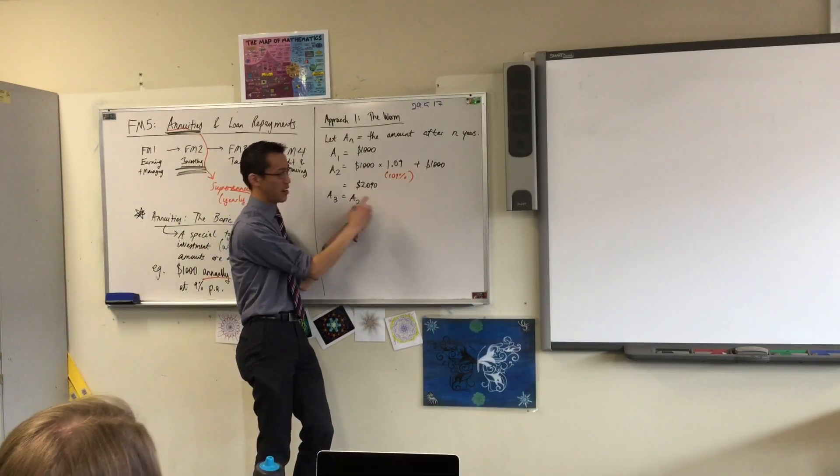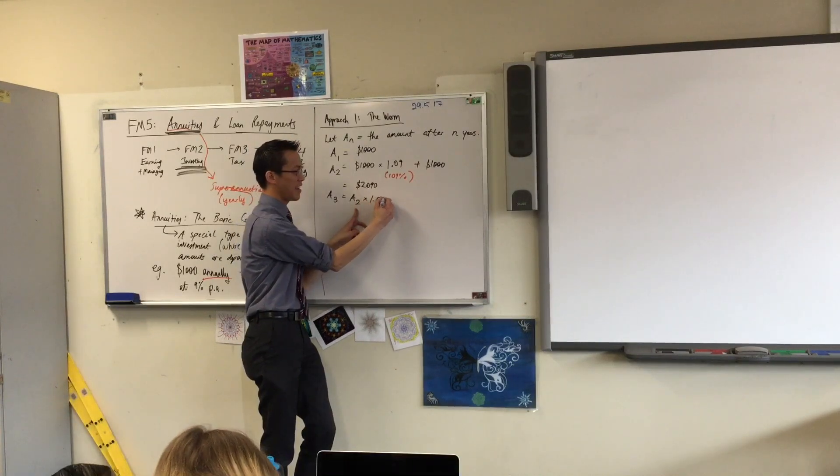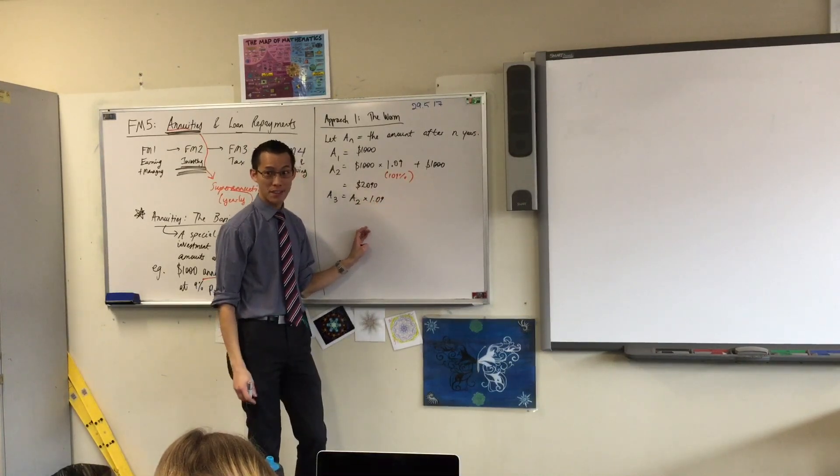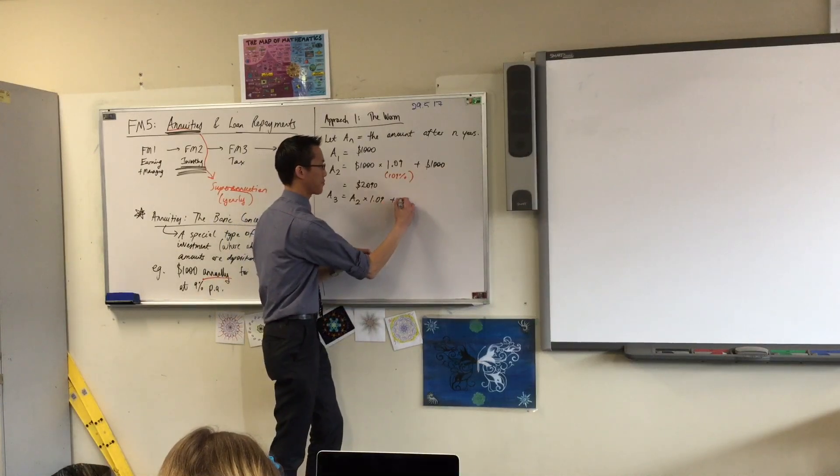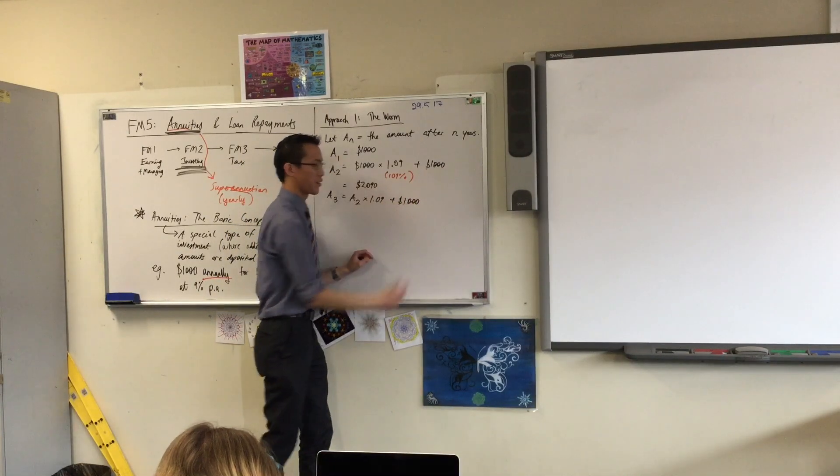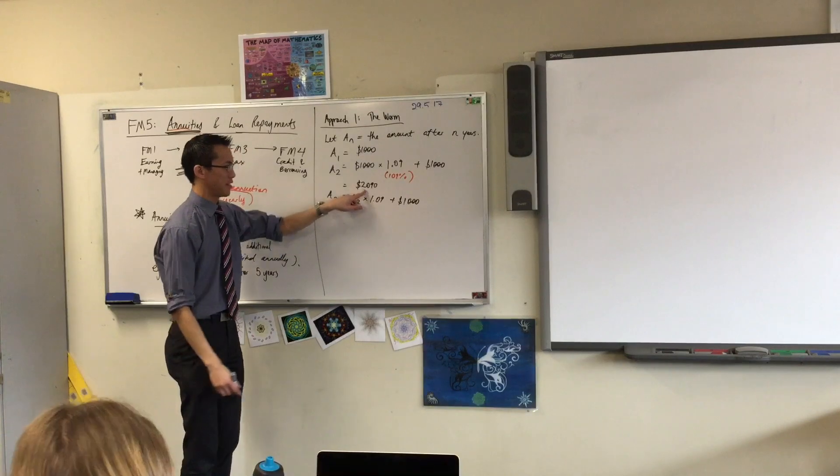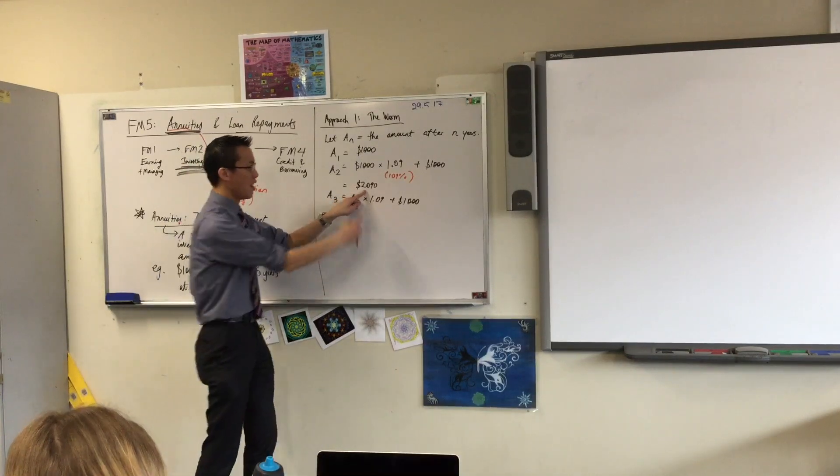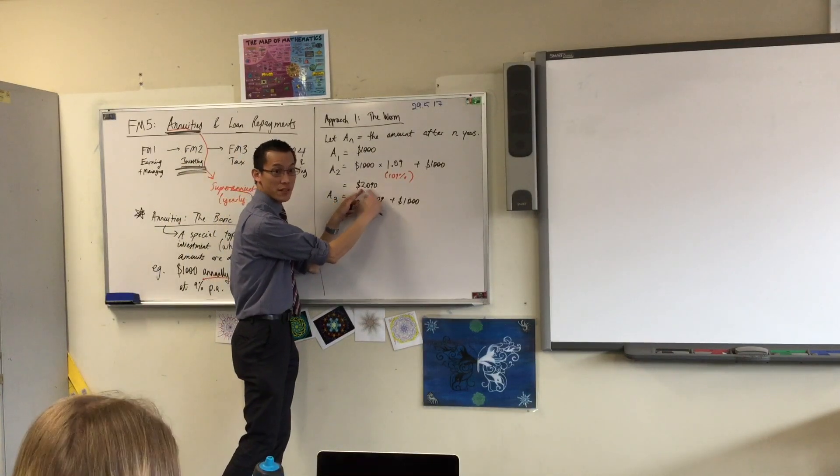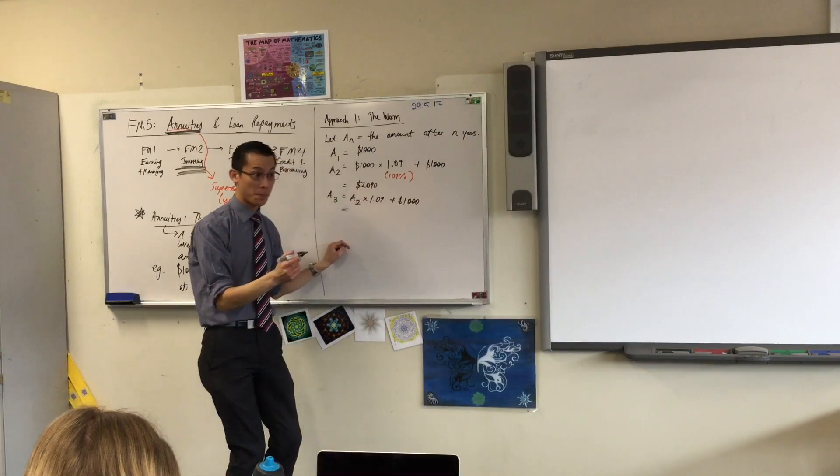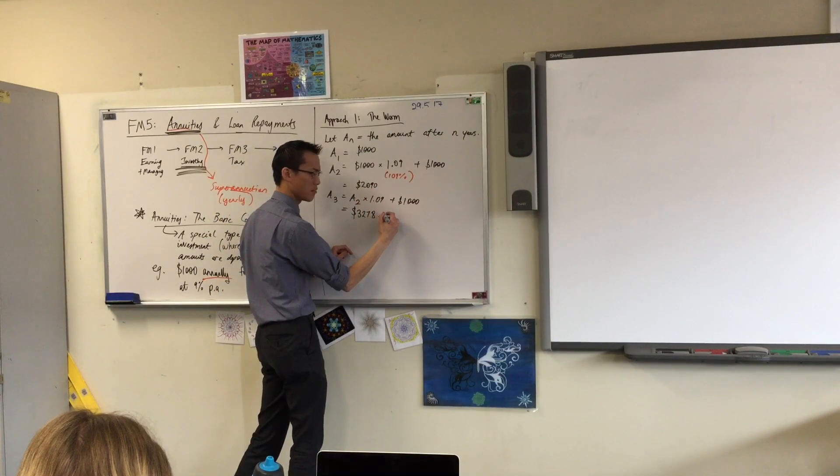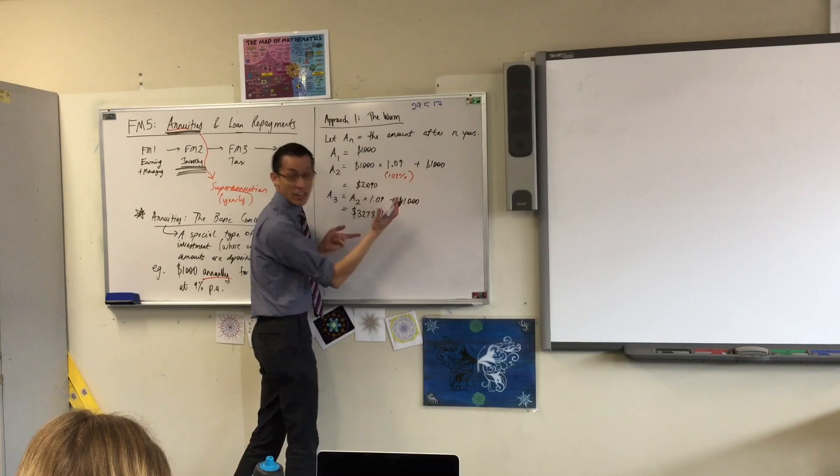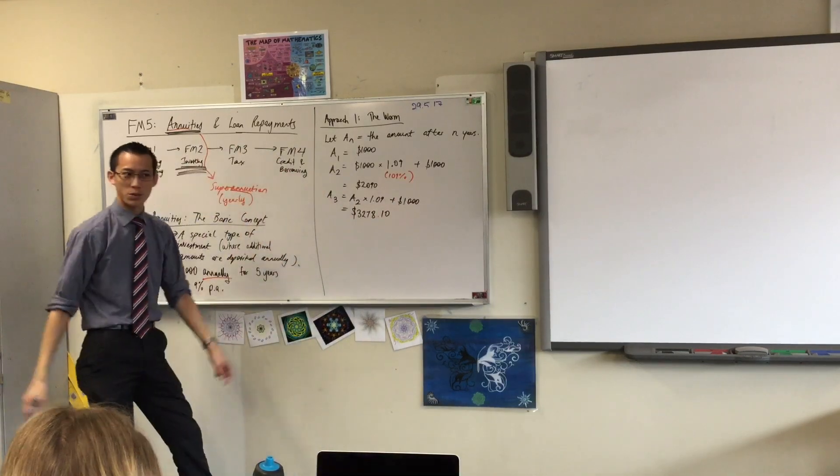Third year. You take what you had last year and you get interest. But then in addition to interest, I'm going to reinvest again. Now, I actually don't know what this is, so you're going to have to work out for me what's 109% of this and then add 1,000. What have we got? 3,278.10. It's dollars and cents, so I'll put two decimal places.